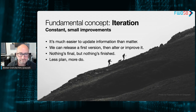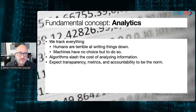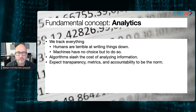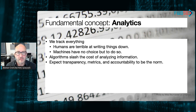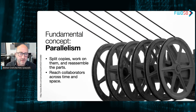Another important concept from this transition to digital is analytics. Humans are terrible at writing things down; machines have no choice but to do so. In a digital world, everything is tracked. I can make a copy of the records of every single transaction and then slash the costs of analyzing those records with algorithms. That means in a digital world we should expect transparency, metrics, and accountability to be the norm — we have to go out of our way not to share information, rather than going out of our way to capture it. One more important concept: parallelism.